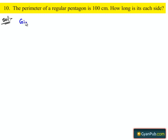Given that the perimeter of the regular pentagon is equal to 100 cm. We know that a regular pentagon is a closed figure with 5 equal sides.